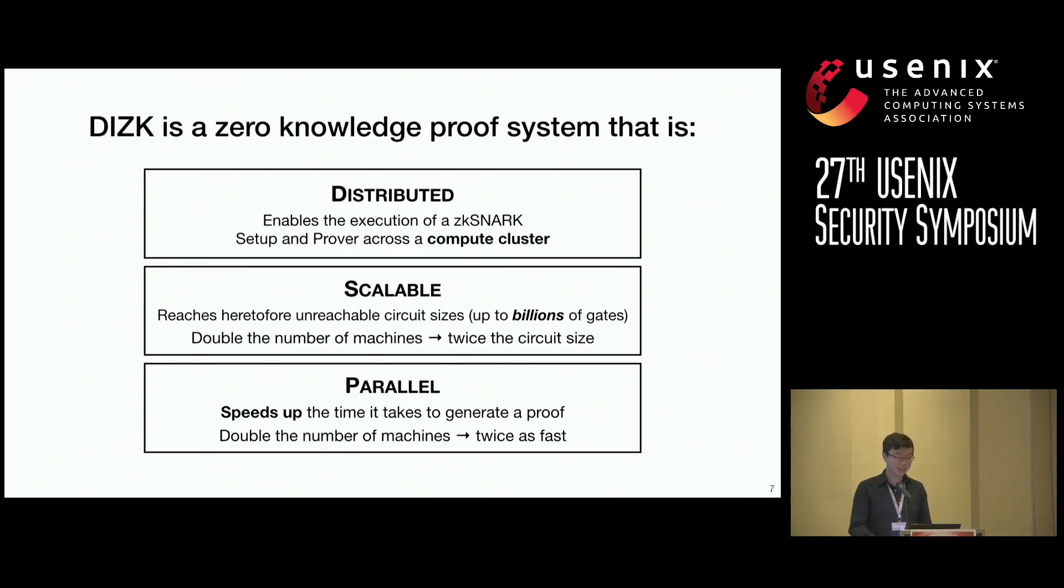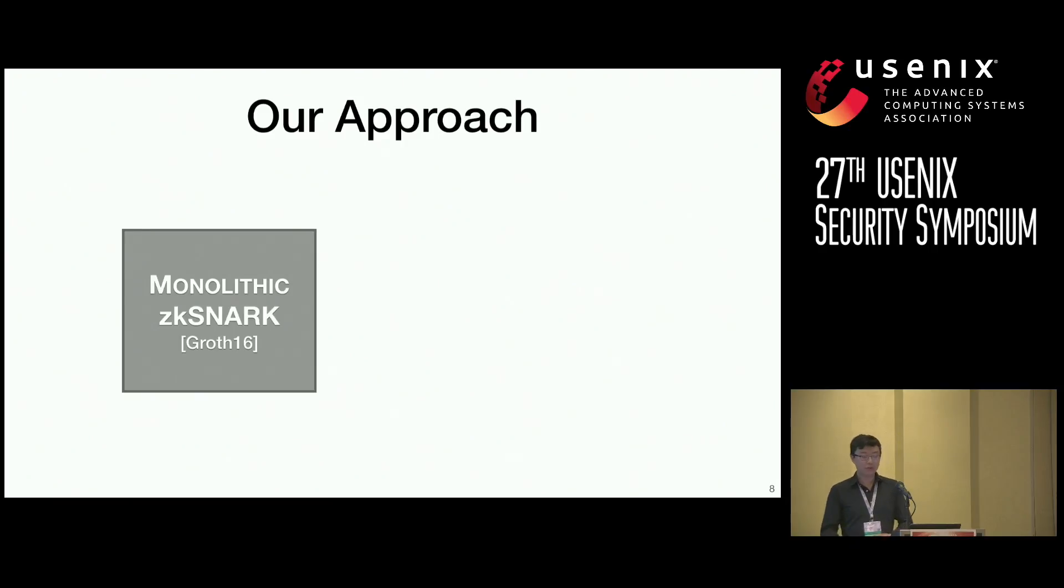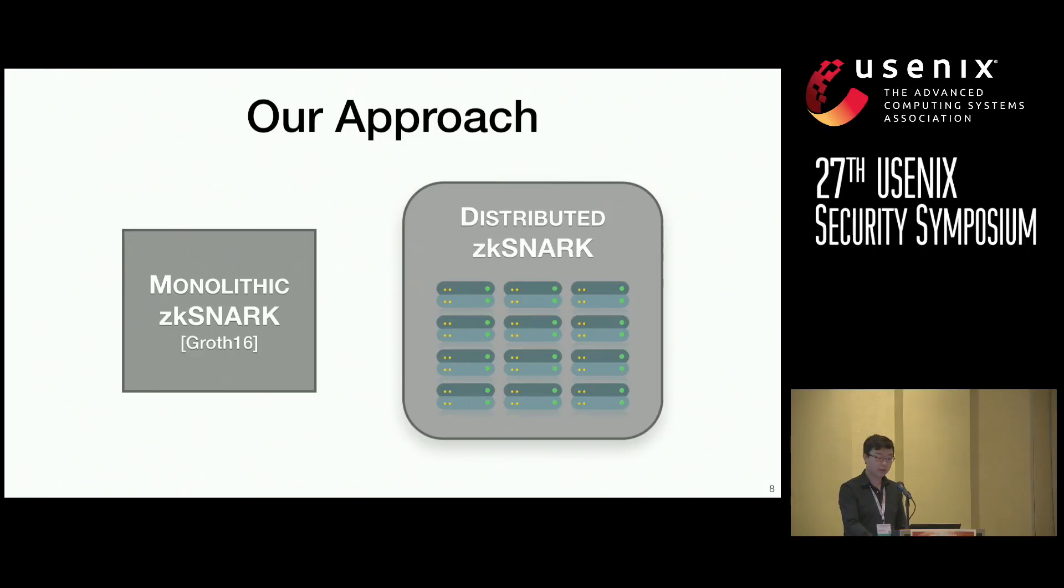So how did we do this? Well, the approach that we took was we used a monolithic ZK-SNARK, namely one by Jens Groth from 2016, and we distributed it on a cluster of machines. Now, this approach appears quite simple. However, it turns out there were a lot of challenges to distributing this protocol. We chose Groth 16, for example, specifically because it's highly efficient and currently offers the smallest ZK-SNARK proof size. And in general, we had to tailor our architecture at every level to ensure that our protocol could adequately demonstrate scalability and parallelism. Let me walk you through some of the challenges we faced now.